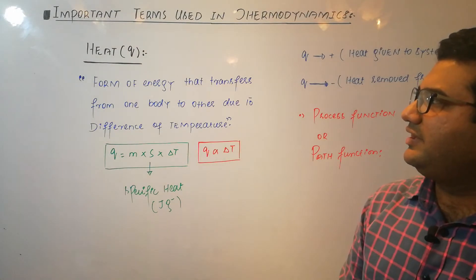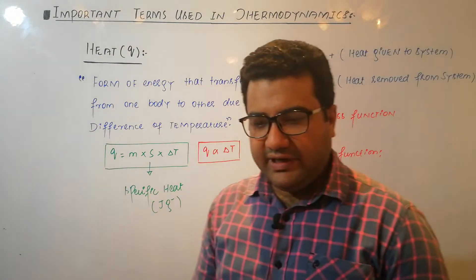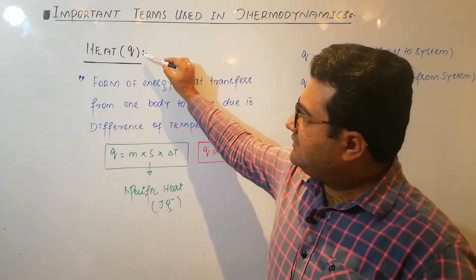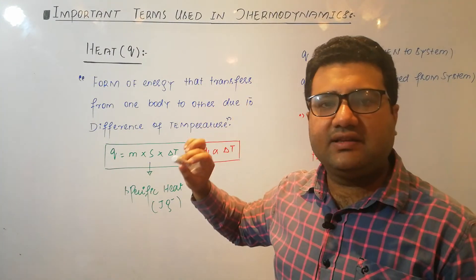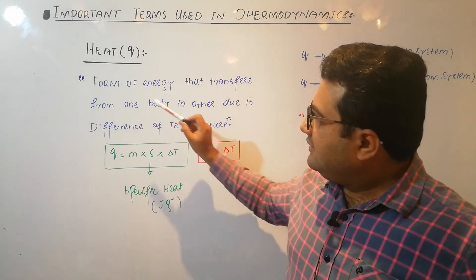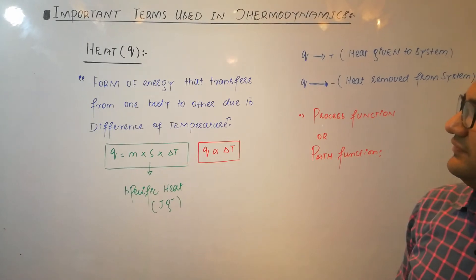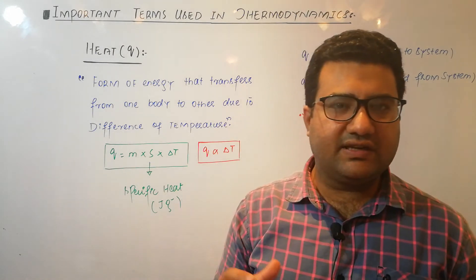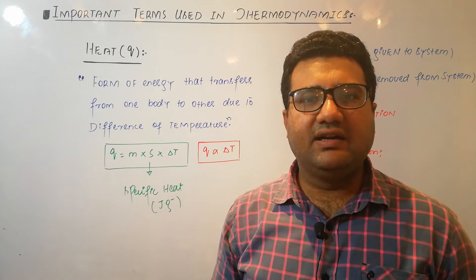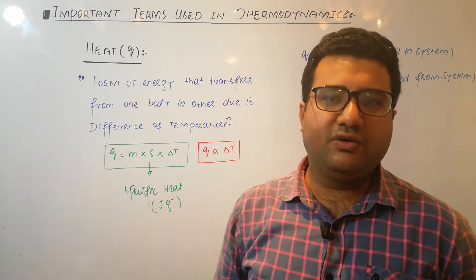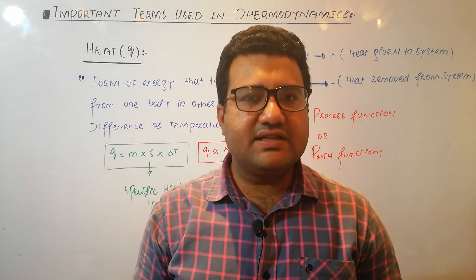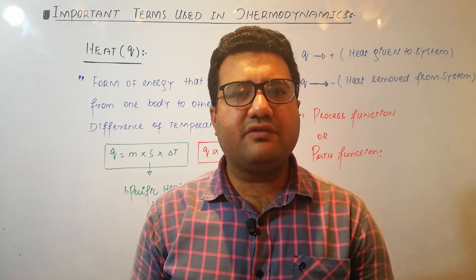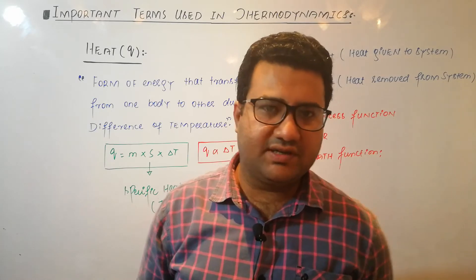The next thermodynamic term commonly used is heat, symbol Q. The complete concept of thermodynamics is based on heat as a form of energy. Heat is a form of energy that transfers from one body to another due to a difference in temperature. It is not a physical quantity but a type of energy that travels between bodies. If the temperature difference between two bodies is zero, there is no heat transfer.